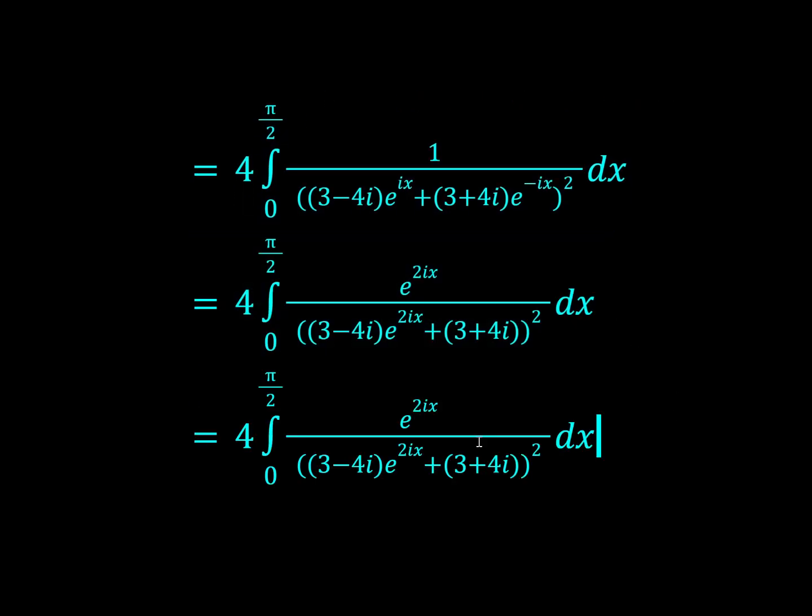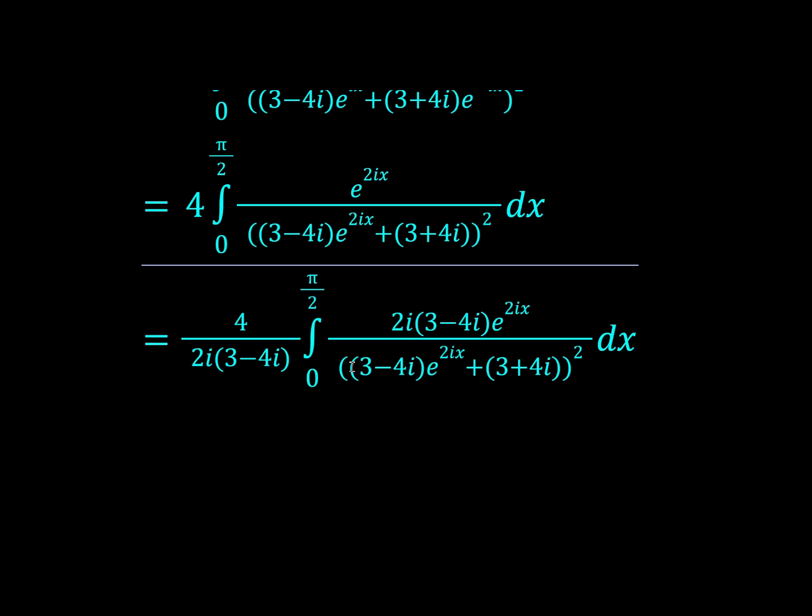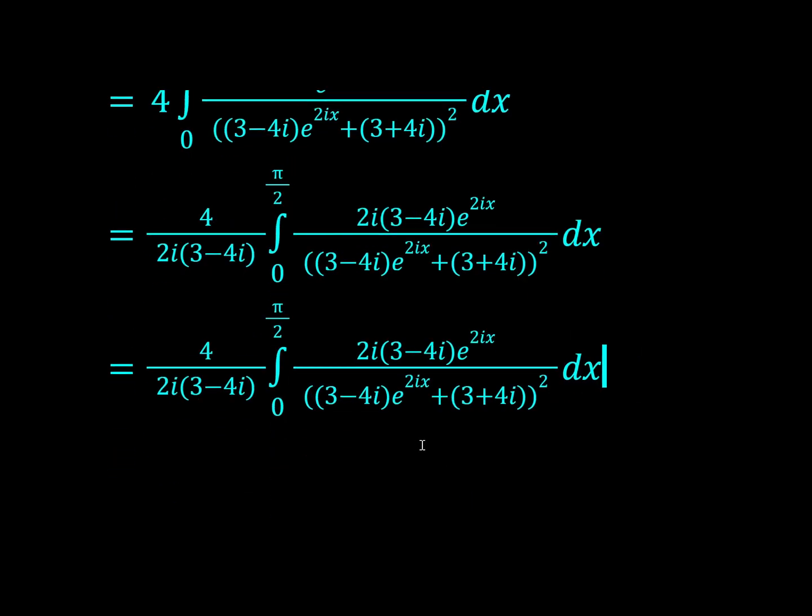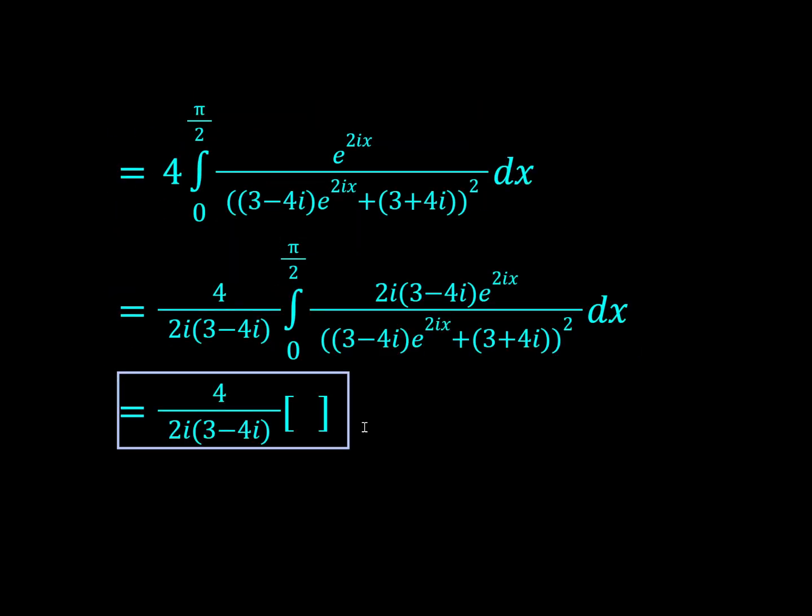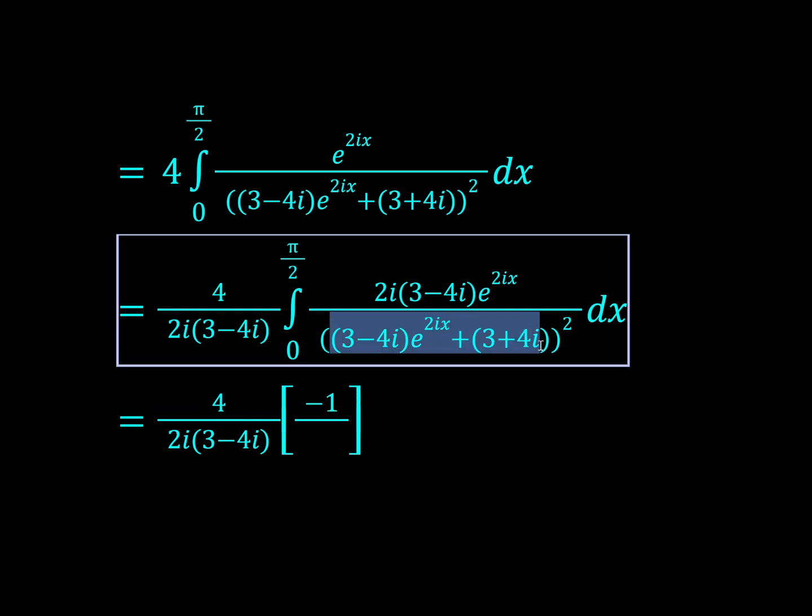Now we just look at the denominator, specifically the thing inside the square. The derivative of that is going to be 2i times (3 - 4i)e^(2ix). And so we just want to manipulate that in the numerator. To compensate, we need to divide by it outside. So now we have it in a good form. We have in the form f'/f(x)² so we can just integrate this with reverse chain rule.